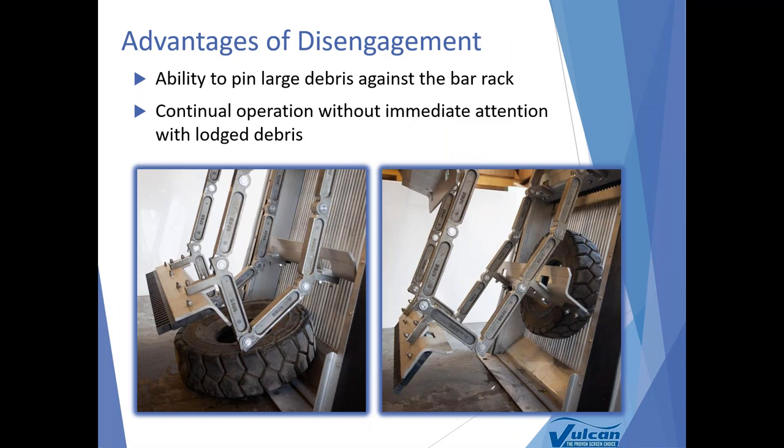Disengagement does have its advantage: if there is material larger than a rake head — such as the tire pictured here — the rake heads can essentially pin it against the bar rack and remove that debris all the way to the top without jams, unlike what would happen with a positive engagement multiple rake screen. The disadvantage is that while that debris is being removed to the top, the rake heads remain away from the bar rack, so blinding does occur on the bar rack until the material is removed. Depending on screen length, this can be an impactful consideration.